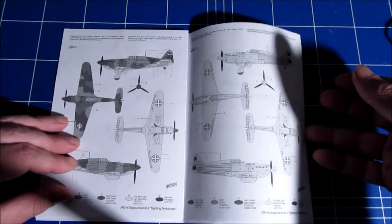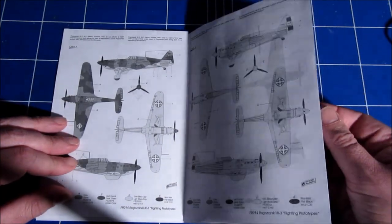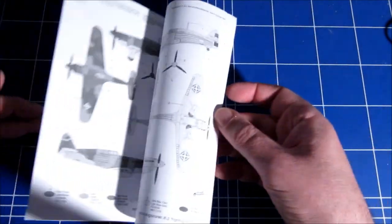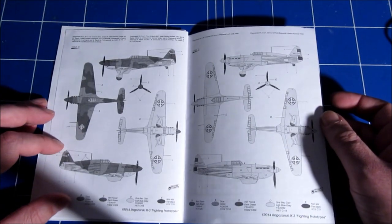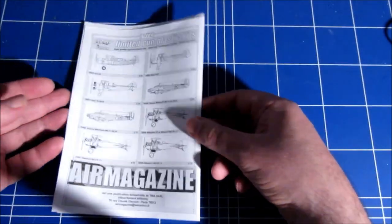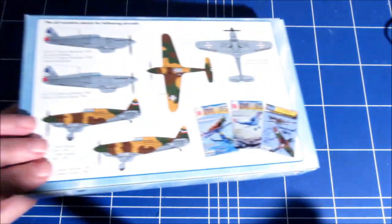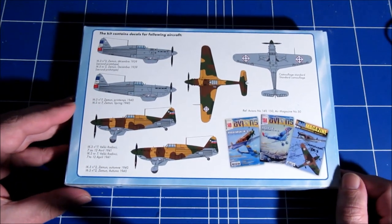Of course this thing you should replace with a Yak spinner. And the painting schemes in black and white and in color on the back of the box.